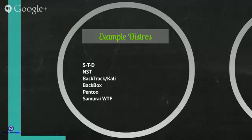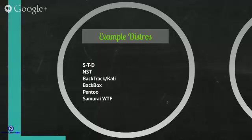For example, with Samurai, it's more focused on performing web-based penetration testing, dealing with web applications. Kali is more broad in its scope — it deals with web applications and all facets of the pen testing methodology, which we'll talk about a little bit later. Each one has a different focus, each one has a different underlying architecture, and each one is designed a little bit differently.